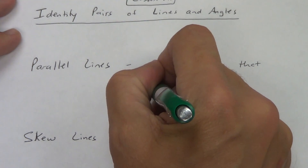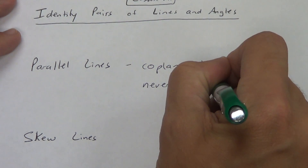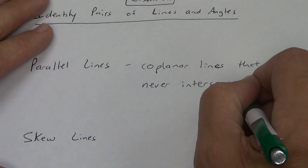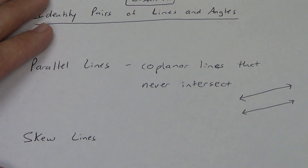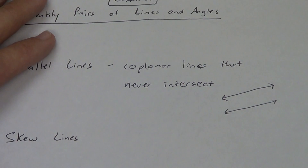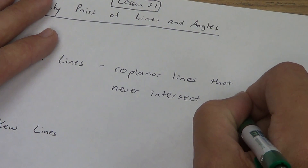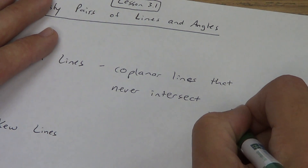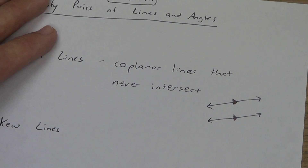Coplanar lines that never intersect. So a quick example of something like that — parallel lines might look something like this. Now there's a symbol for parallel lines, and that symbol is a little triangle, and it's kind of shaded in like that. So if you see that symbol, that means the lines are parallel.